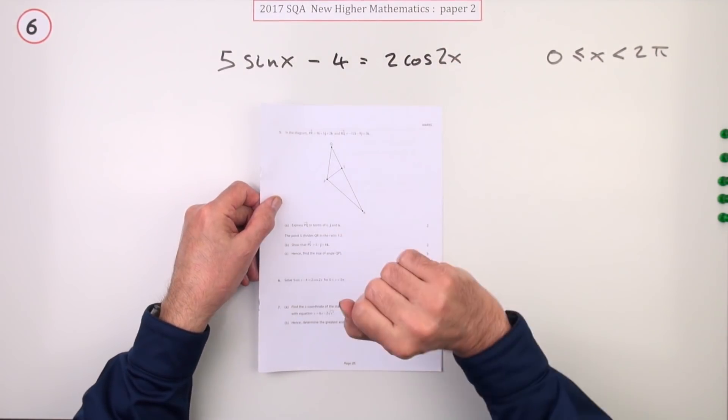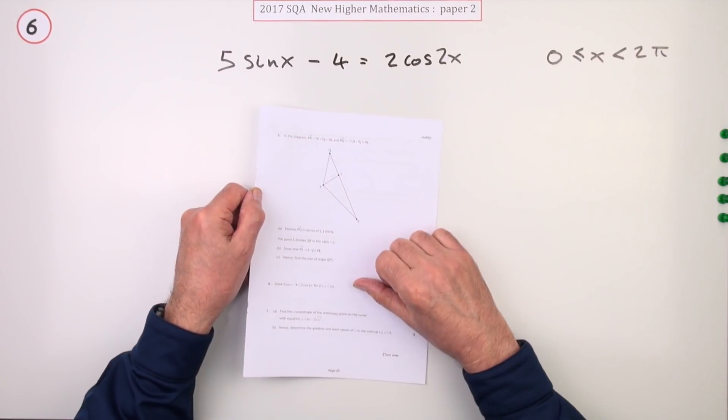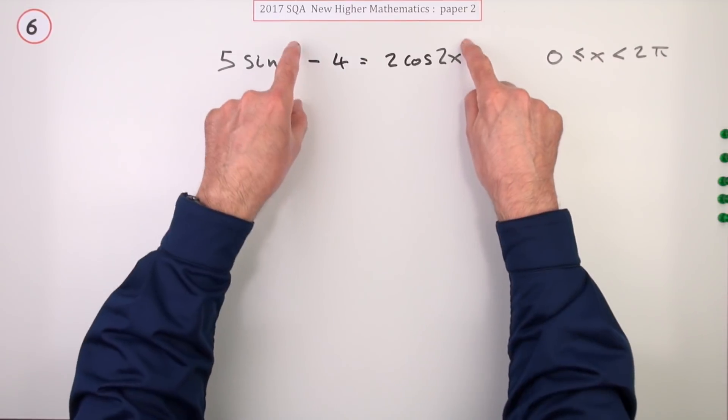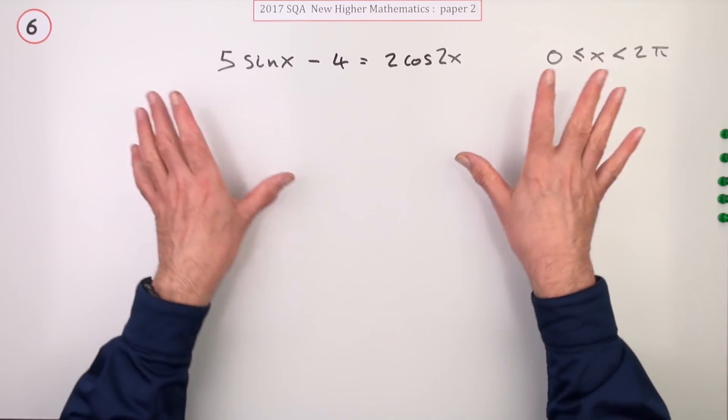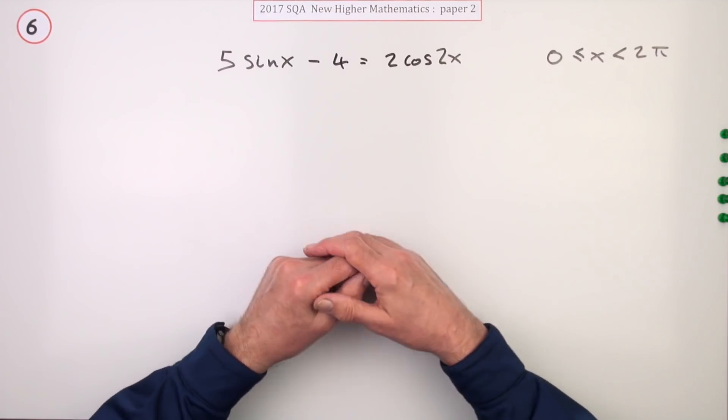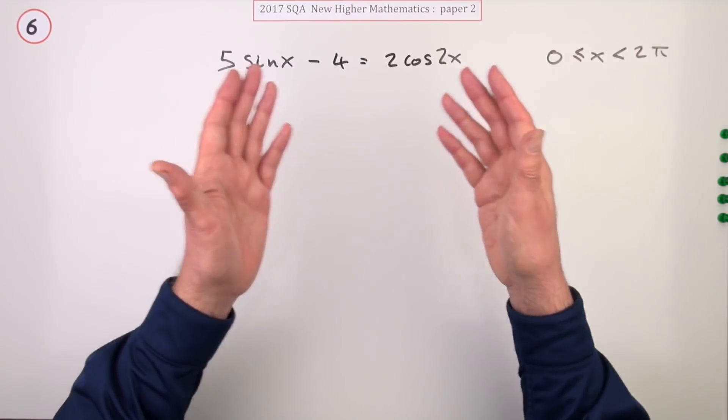Number six from paper two of the 2017 New Higher Maths. The double angle equation, five marks for this one. Notice no degree signs there, it's confirmed it's in radians. That's not a big problem really, just set your calculator to radians. If you're really unhappy with them, by all means do it in degrees but put your answer back into radians afterwards.